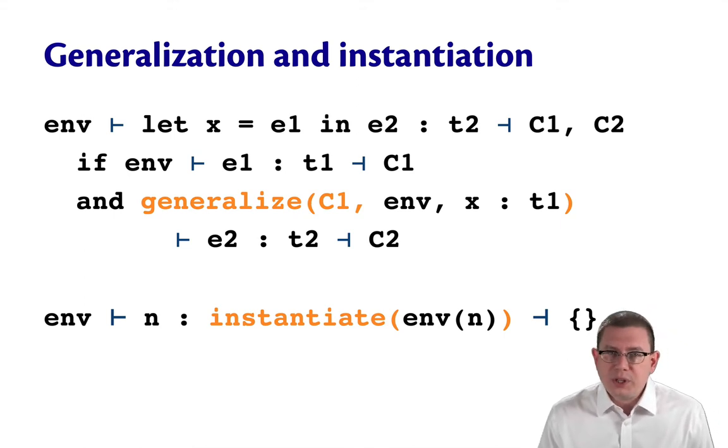The name rule is the other one we need to update. Here we need to instantiate any type scheme we discover when we use the name of a variable.